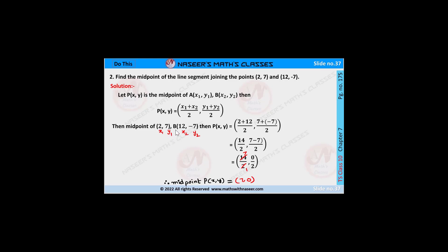If A is (2,7) and B is (12,-7), then the required point P(x,y) is written as (2+12)/2, (7+(-7))/2.